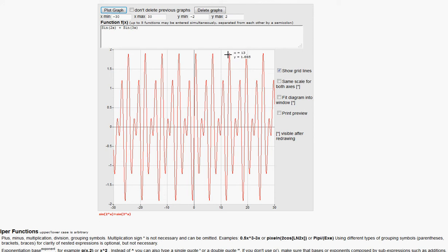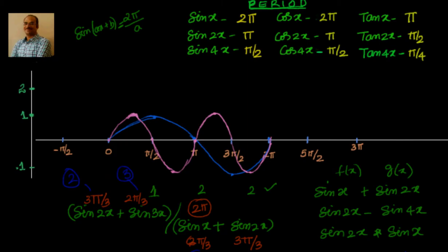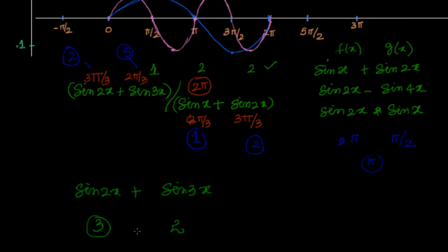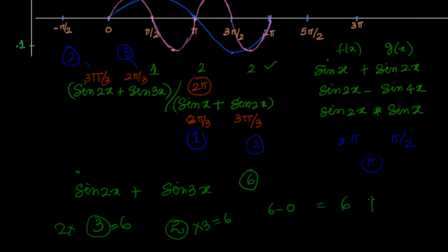To summarize the sin(2x) + sin(3x) example: sin(2x) period ≈ 3 (i.e., π) and sin(3x) period ≈ 2 (i.e., 2π/3). Starting at 0, sin(2x) completes 2 cycles in time 6 (2 × 3 = 6) and sin(3x) completes 3 cycles in time 6 (3 × 2 = 6). They meet again at 6, so the period of the combined function is 6 — that is, 2π.